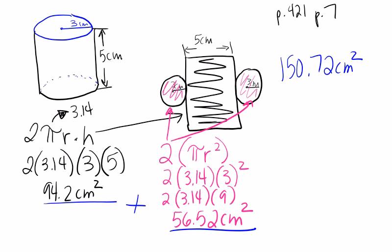When we go back to the question it says to round to the nearest tenth. This is my tenths place. When I look to the right, if this number is greater than five I round up. Well this one's not greater than five, so my final answer is 150.7 centimeters squared.